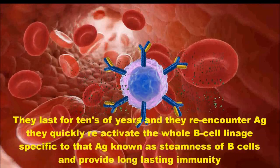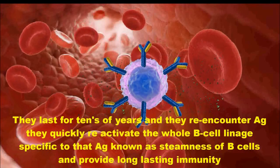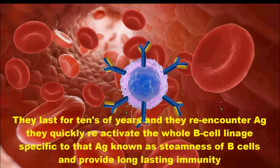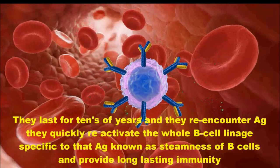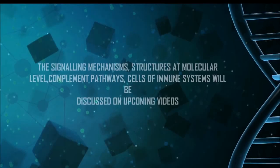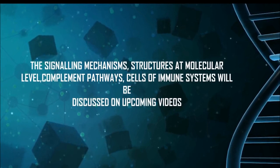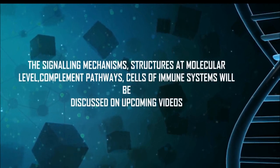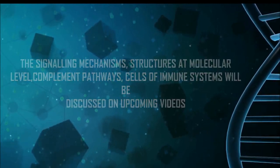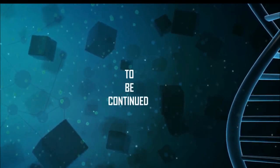Memory cells can last for tens of years and re-encounter antigens. They quickly reactivate the whole B cell lineage specific to that antigen, known as the stemness of B cells, and provide long-lasting immunity. The signaling mechanisms, structures, molecular-level component pathways, and cells of the immune system will be discussed in upcoming videos. Thank you.